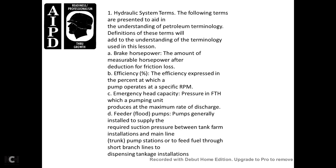Understanding the terminology: brake horsepower is the amount of net horsepower after the deduction of friction loss. Efficiency is expressed as a percentage of pump operation. Specific speed is the RPM at which a pump produces maximum rate of discharge, expressed as FTH or PSI.